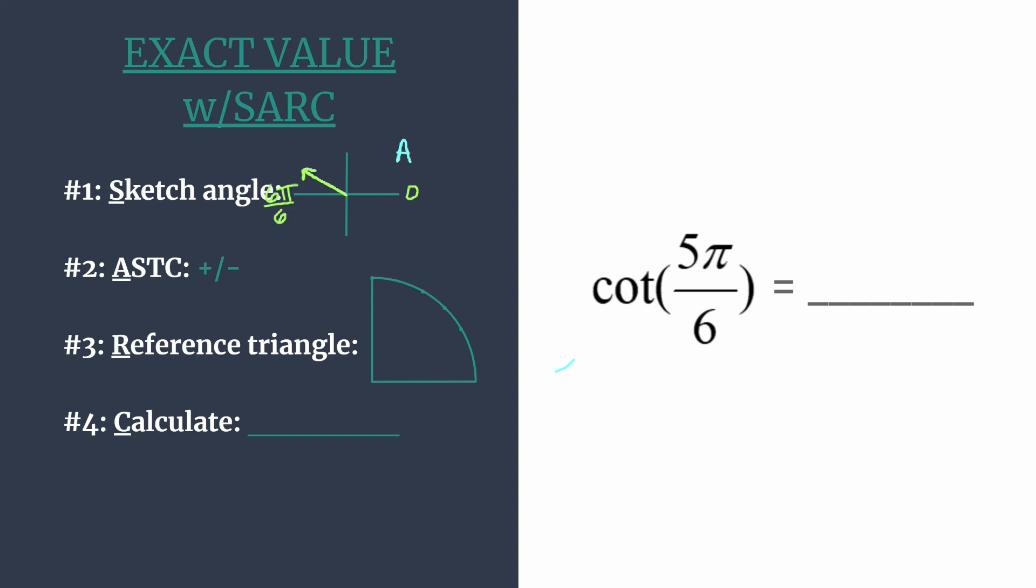So in quadrant 1, we have A, S, T, C. So we're just working our way around there. All are positive in quadrant 1. Sine and its reciprocal cosecant are the only ones that are positive in quadrant 2.